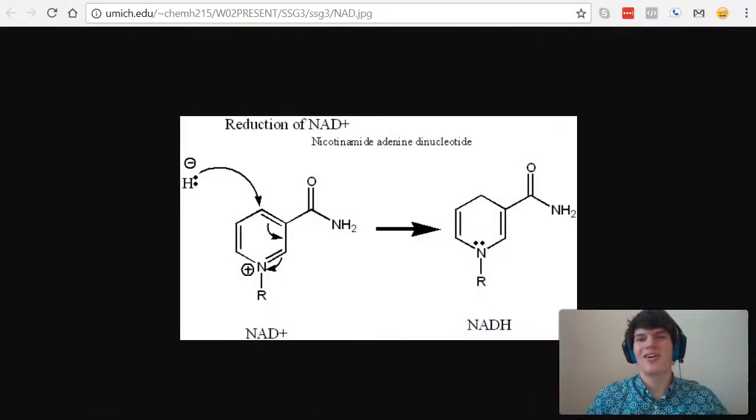A big purpose of glycolysis and Krebs cycle is to convert NAD-plus into NADH and FAD into FADH2. These processes are examples of oxidation-reduction reactions. That's because the hydrogen that joins these species brings with it electrons.